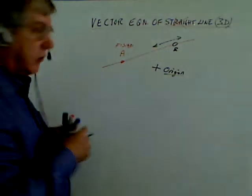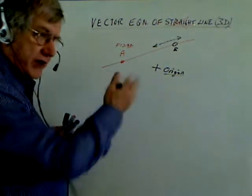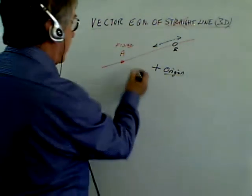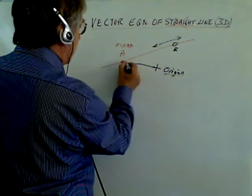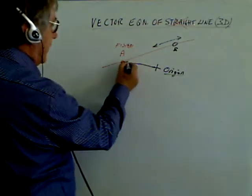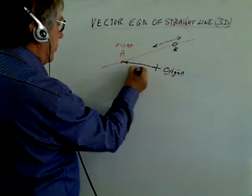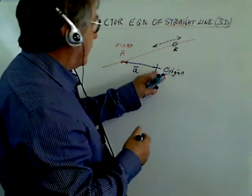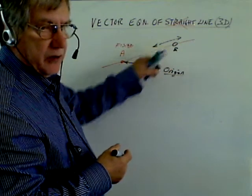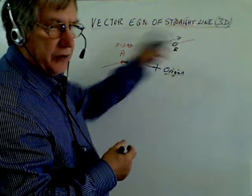This is all vectors, of course, so we can just write down the vector equation of a straight line. This vector here, from the origin to the point A, is of course just small a, that's the notation we use. This one, the one that's moving along the line, is just small b.